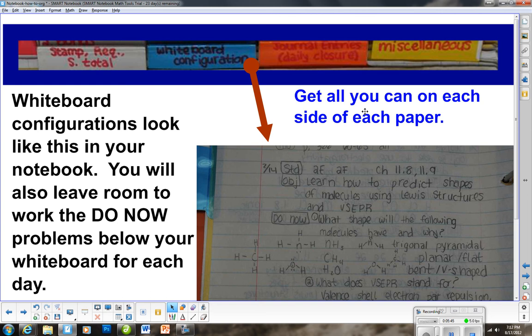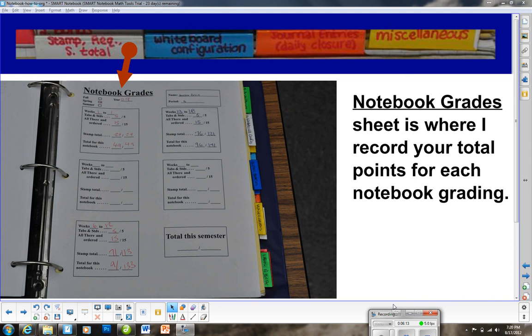Right after that, you'll have your whiteboard configuration. Here's that notebook grade sheet. This is where we record everything that is going to affect your grade for the notebook. You don't want to have what you see here. That means that this student did not get the notebook graded for the second grading. You want to be turning in your notebooks every time and on time, and be sure that you are doing all your homework because the homework is like 80% of this notebook.